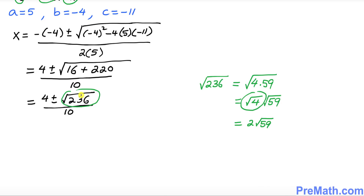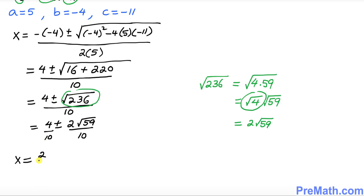So the square root of 236 can be written as plus or minus 2 times the square root of 59. We can split the denominator of 10 into a fraction: the 4 over 10 reduces to 2/5, and the 2 over 10 reduces to 1/5. So x turns out to be 2/5 plus or minus the square root of 59 divided by 5.